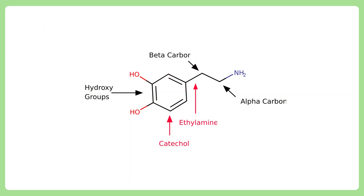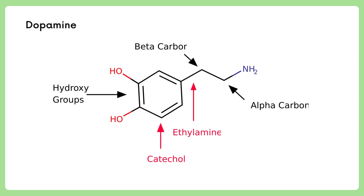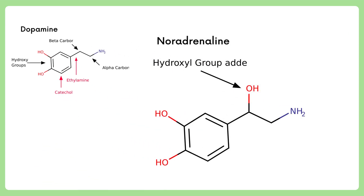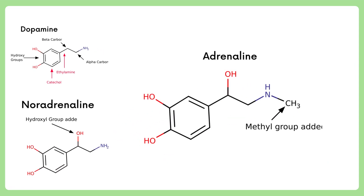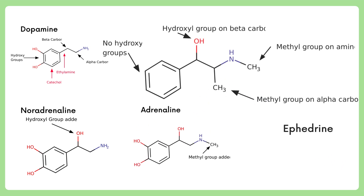Now let's see the structures of a few important sympathomimetic drugs. Dopamine is the prototypical catecholamine to which others are compared. Noradrenaline has a hydroxyl group added to the beta-carbon, increasing its alpha-selectivity. Adrenaline is similar to noradrenaline with an additional methyl group on the amine, increasing its beta-selectivity. Ephedrine has a methyl group on the amine but no hydroxyl groups on the phenol ring, further reducing its potency and increasing its elimination half-life.